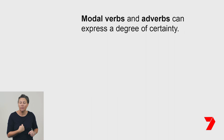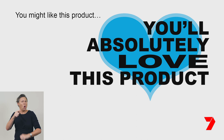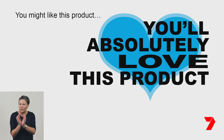Modal verbs and adverbs can be used to express the degree of certainty of actions or commands. Advertisers use high modality, which means they use verbs and adverbs with a high degree of certainty. For example, an advertiser wouldn't say 'you might like this product.' They would claim 'you'll absolutely love this product.' Both the adverb 'absolutely' and the verb 'love' have high modality.